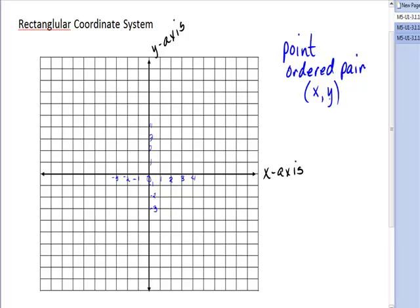So every point, let's say for instance this point, it would be named with an ordered pair or with the coordinates 3, 2. Because from where everything originates, it's called the origin, from the origin in the x direction you'd go to 3, in the y direction you'd go to 2. It's like going three blocks one way and two blocks the other.